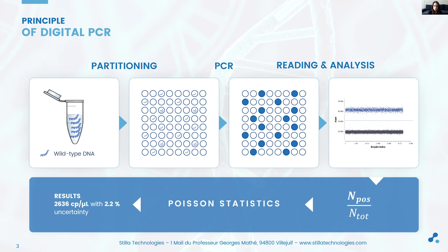The analysis software then uses the proportion of positive droplets and Poisson statistics calculations to estimate the concentration of the target of interest, together with the uncertainty on the measurement. The latter arises from the fact that a positive droplet may contain more than one target sequence initially, and it is dependent on both the concentration of the target in the PCR mix and the number of droplets generated.